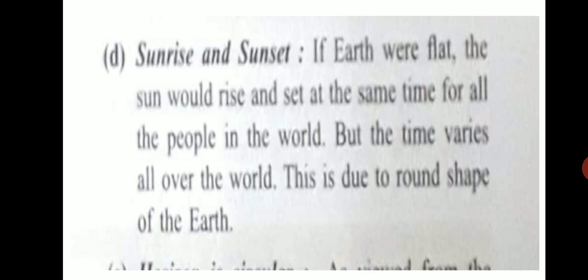Sunrise and sunset. If Earth is flat, then all places on Earth will have sunlight together, sunset will be together. But as Earth is spherical, only one part of Earth gets the light and other parts remain in the dark. So this proves that Earth is spherical in shape.